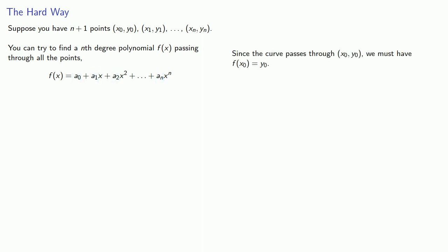Now since the curve passes through (x0, y0), we must have f(x0) equals y0. And so this gives us one equation with n+1 unknowns.